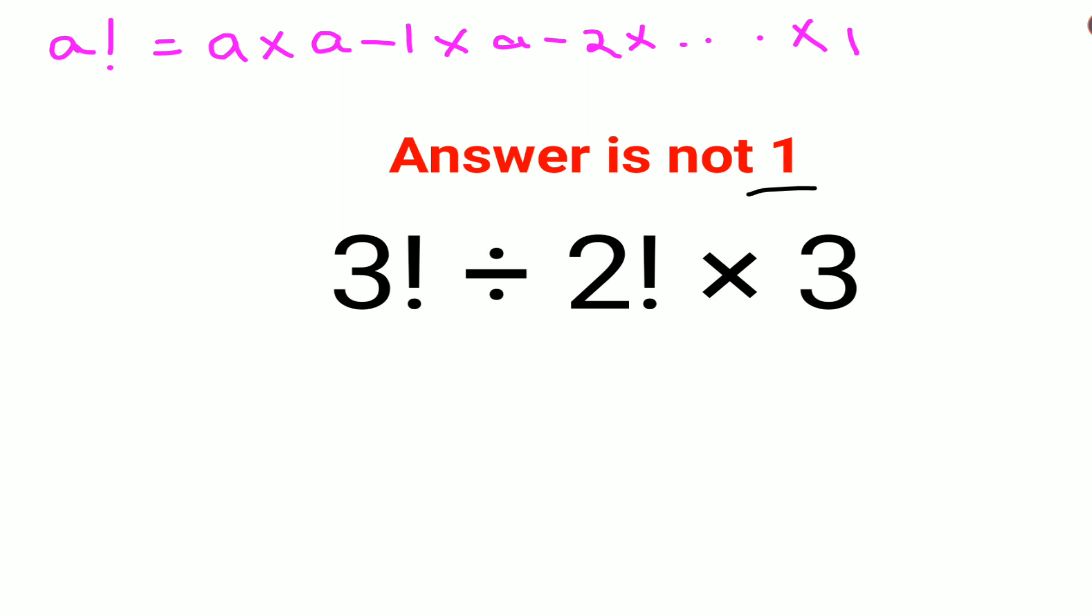So here, for 3 factorial, you can write this as 3 into 2 into 1, which gets you 6. And 2 factorial can be written as 2 into 1, which gets you 2. So let's put the value over here.